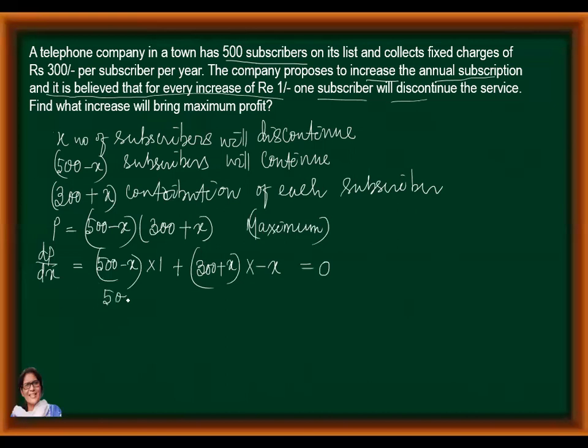So simplify this. It will be 500 minus X minus 300 minus X. There is a mistake in the differentiation. So very sorry. It will be minus 1. So it will be 500 minus X plus minus X minus 300 is equal to 0. What it gives you? It gives you minus 2X is equal to minus 200, or X is equal to 100.